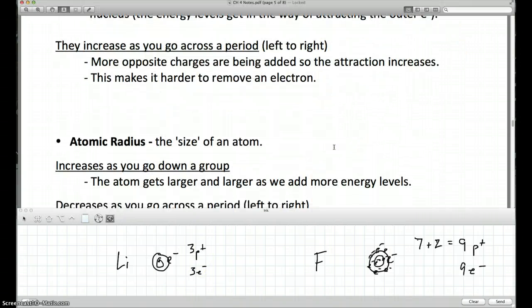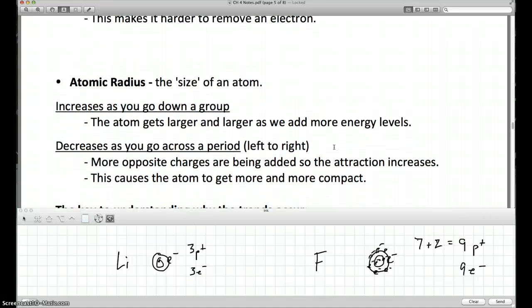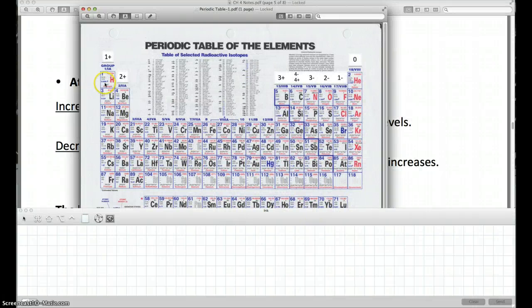The next trend we're going to talk about real quick is atomic radius. And atomic radius is basically just the size of the atom. Now, the first one increases as you go down a group. Again, as I go from hydrogen to lithium to sodium, potassium, rubidium.